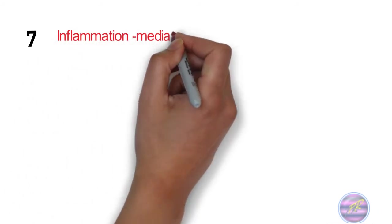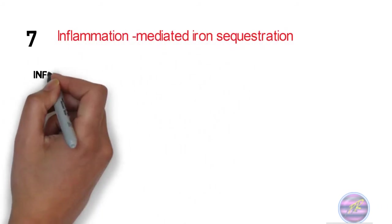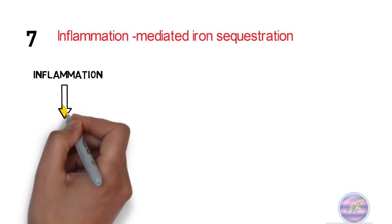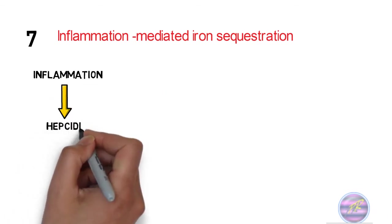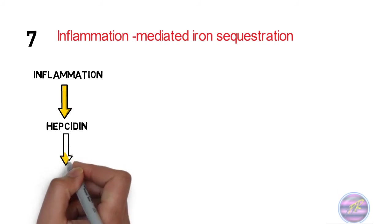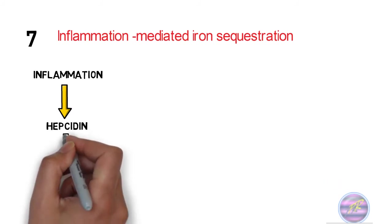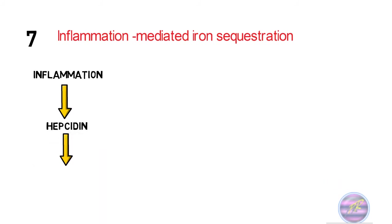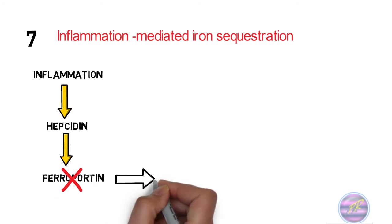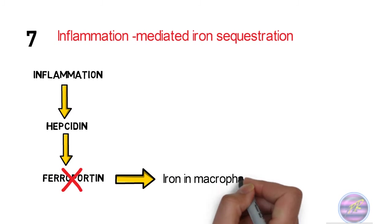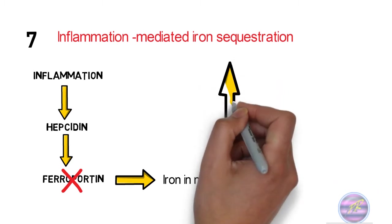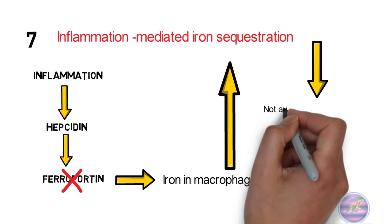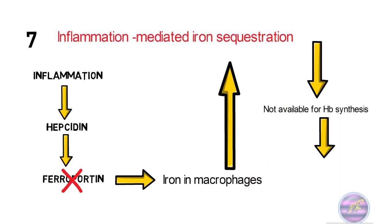The seventh cause is inflammation-mediated iron sequestration. In this case, the inflammatory cytokine is an inducer of hepcidin. Hepcidin is a regulator of iron homeostasis. It controls the iron export by ferroportin inactivation. Hepcidin excess causes breakdown of ferroportin. So the iron in the macrophages are not available for hemoglobin synthesis. Example is anemia of chronic disease.